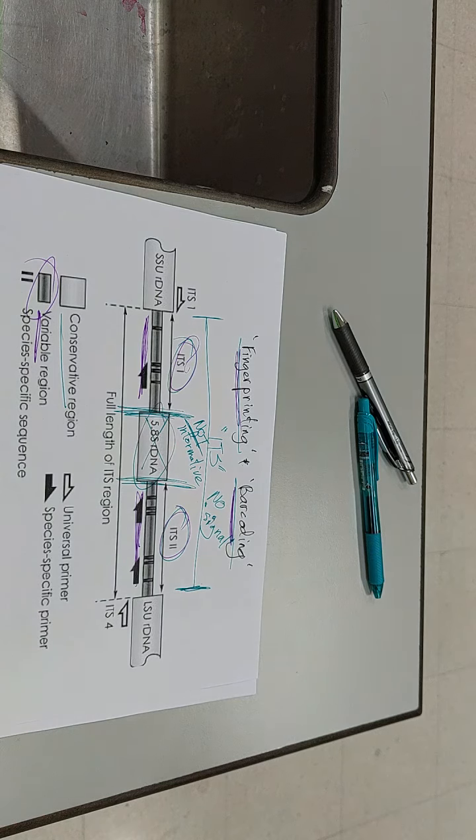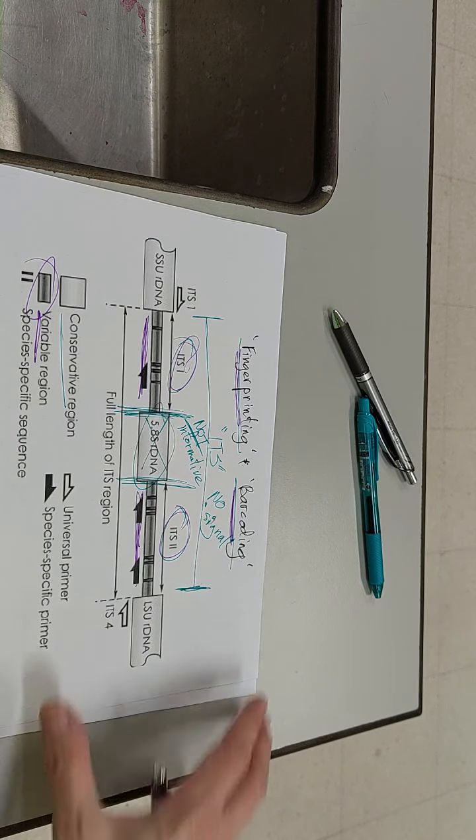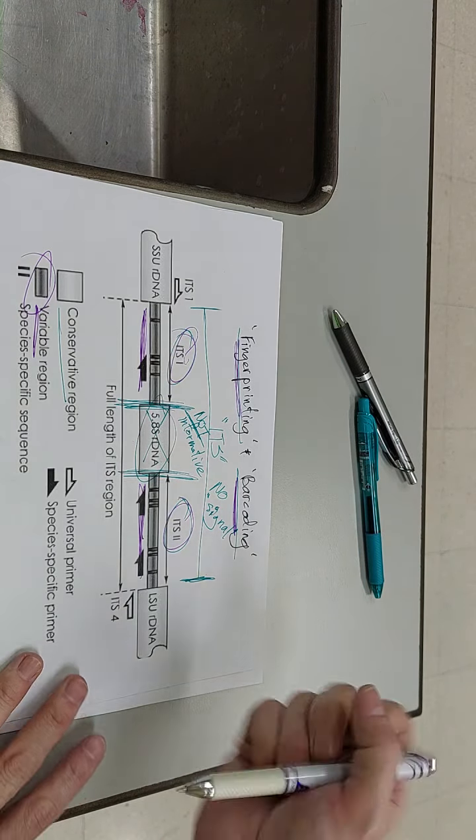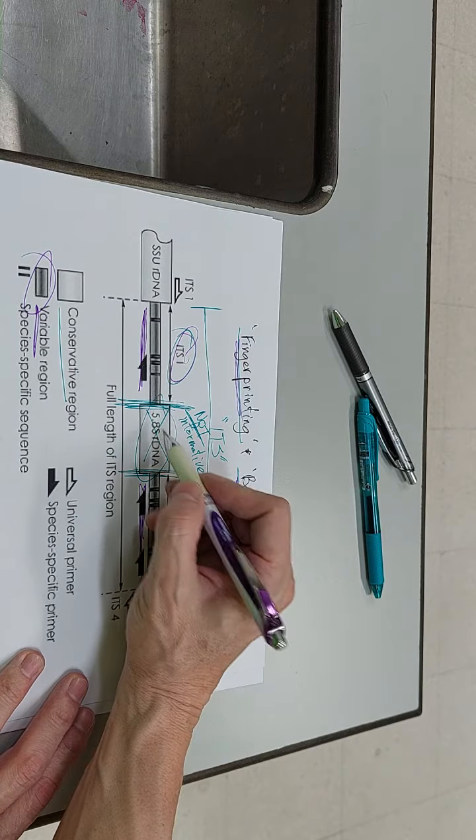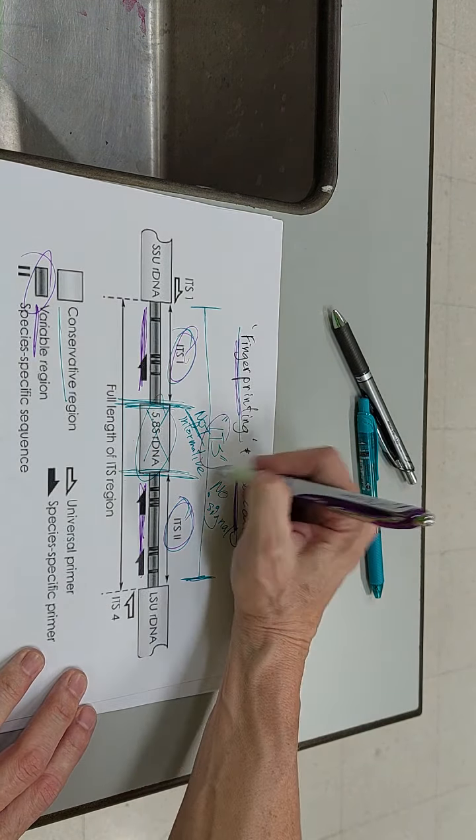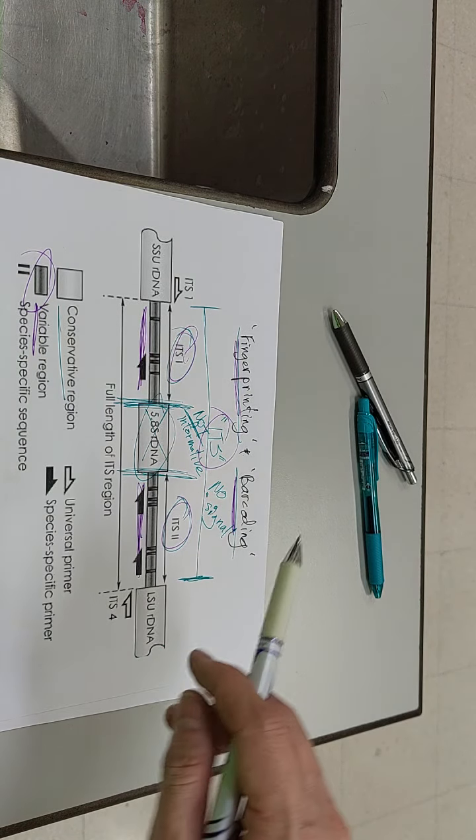And so that means that we can use the ITS, here's where it comes to us in the fingerprinting and the barcoding kind of the utilitarian way, is that we can use that highly variable region, or I shouldn't say highly variable, variable region, to identify species. Species and populations.